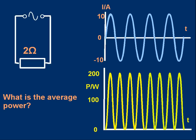Well, a graph of power versus time looks like this. On the y-axis I've got power in watts, going up to the maximum of 200 watts — that's what we worked out just a moment ago. When the current is 10 amps the power is 200 watts; when the current is minus 10 amps the power is still 200 watts.